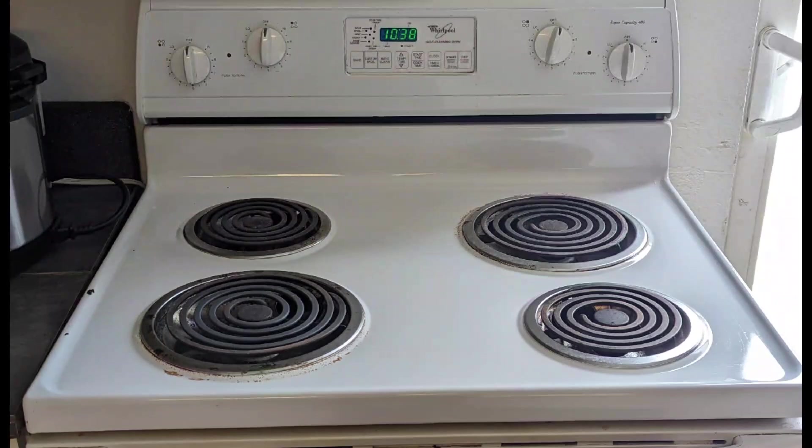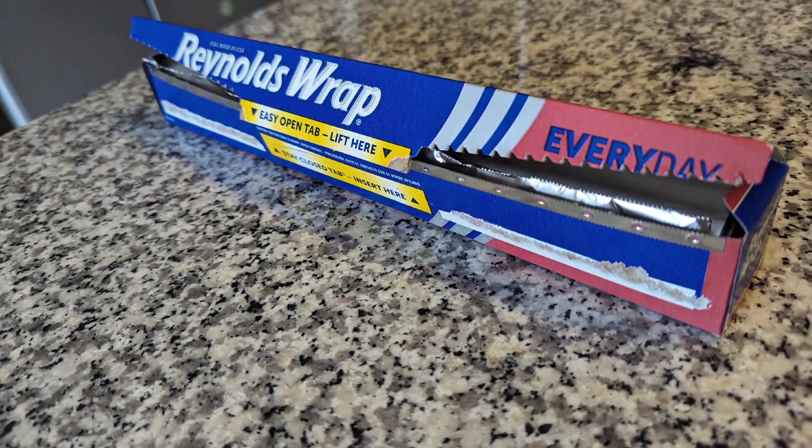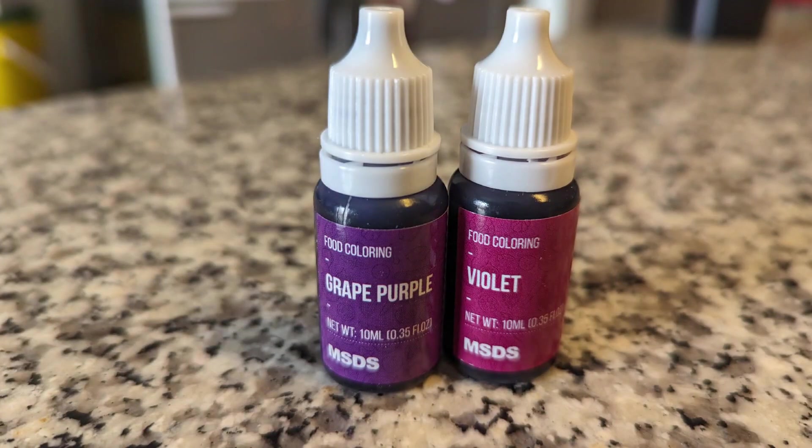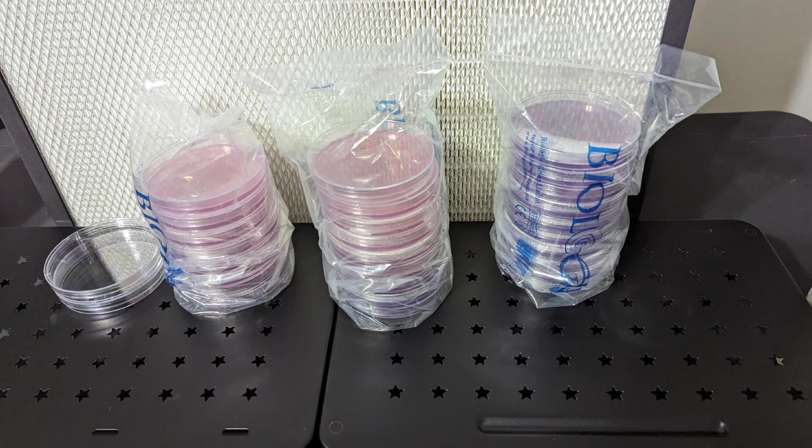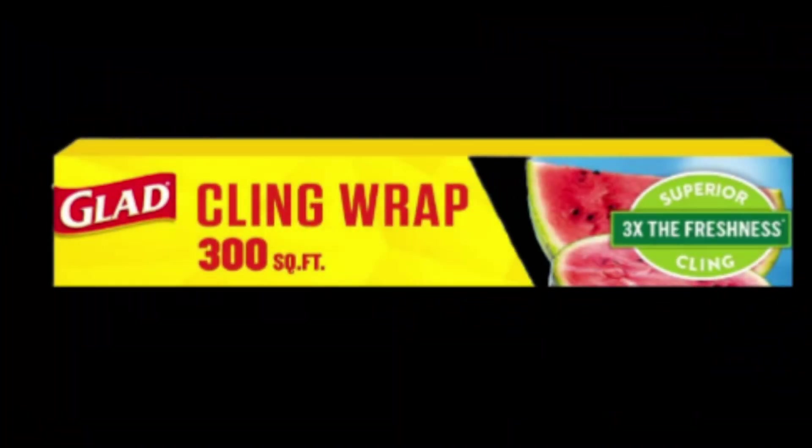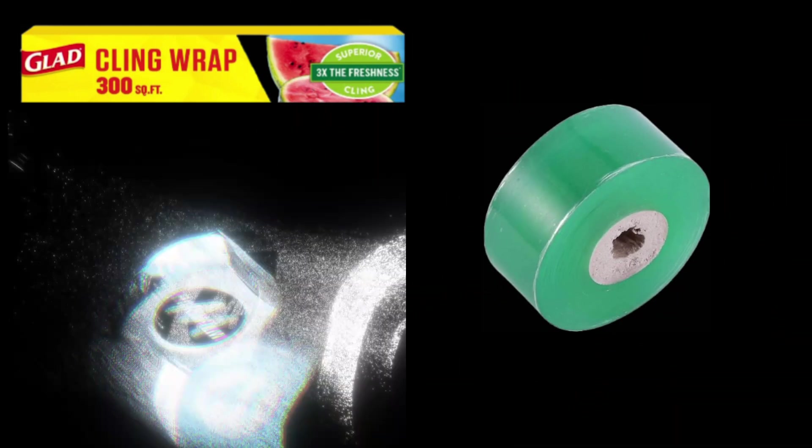You will need a stove or heat source to boil the agar and LME mixture, a whisk for stirring, a pot with a lid, media bottles (250 milliliter bottles are used in this video), aluminum foil, a scale for weighing ingredients, a measuring cup, food coloring which is optional, sterile petri dishes (I got mine from North Spore), a still air box, flow hood, or FFU to pour the agar in, and lastly cling or food wrap, parafilm, or grafting tape.